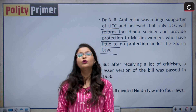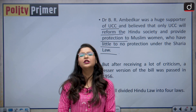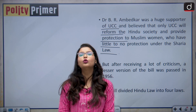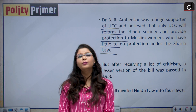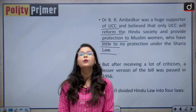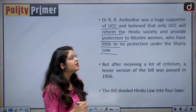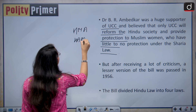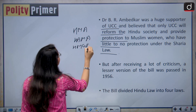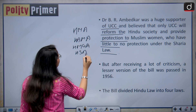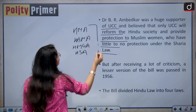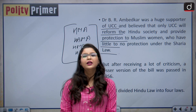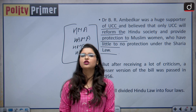The first step taken towards the implementation of the Uniform Civil Code was the formation of the B. N. Rau Committee in 1941 to have a unified personal law for Hindus, known as the Hindu Code Bill. The Hindu Code Bill was finally passed in 1956 after much controversy. It divided the Hindu law into four acts: the Hindu Marriage Act, the Hindu Adoptions and Maintenance Act (HAMA), the Hindu Minority and Guardianship Act (HMGA), and the Hindu Succession Act. Prime Minister Jawaharlal Nehru also stated this Hindu Code Bill to be the first step in implementation of the UCC.